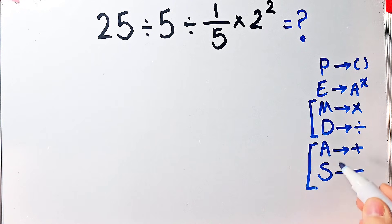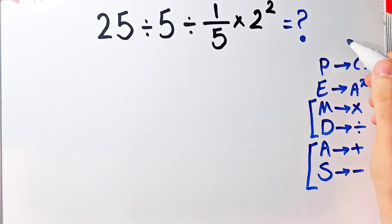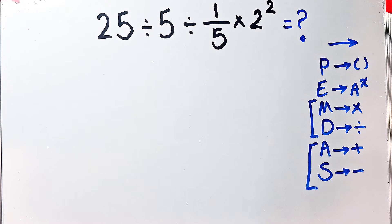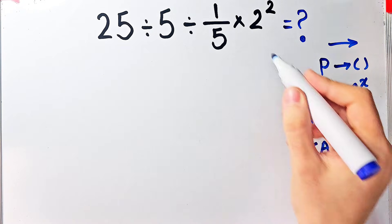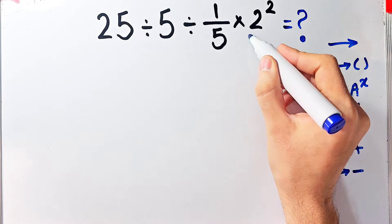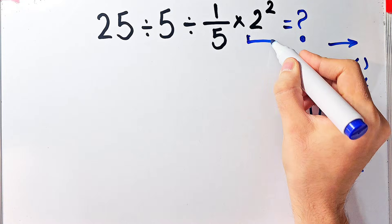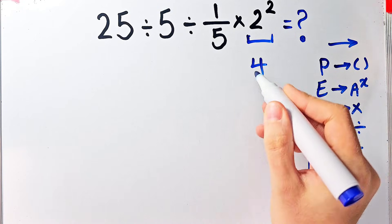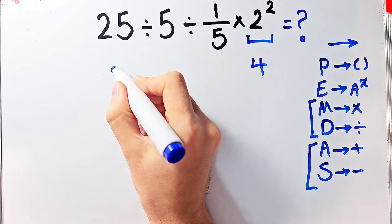When we have both in an expression, we start from the left and simplify. According to the PEMDAS rule, in this question we first simplify the exponent: 2 to the power of 2 equals 4.